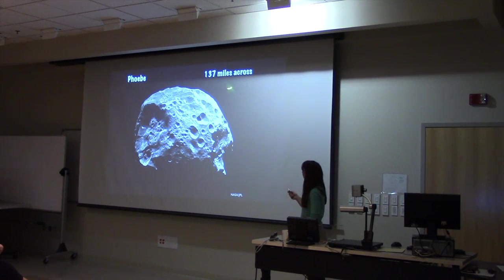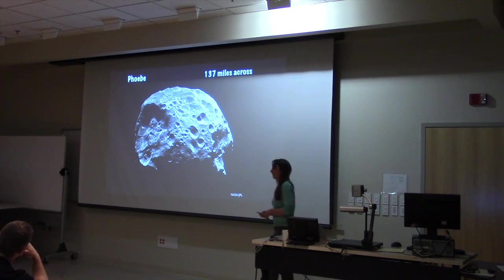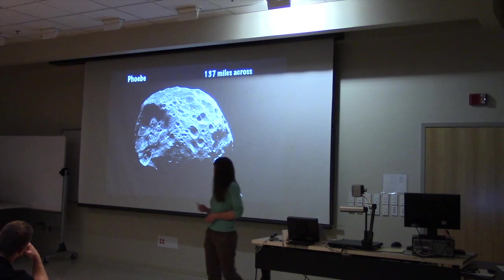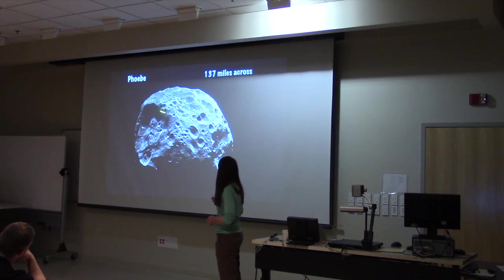It's a relatively large moon, 137 miles across, but still small compared to Titan. This moon is quite far out. It's about four times further out than any other large moon of Saturn.